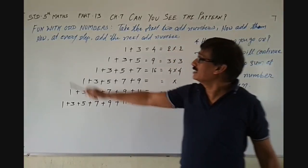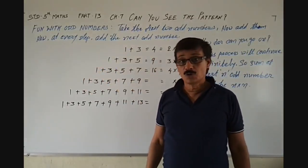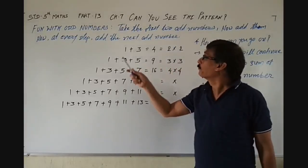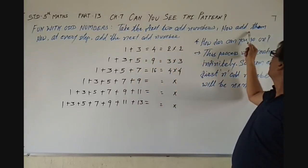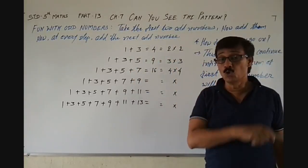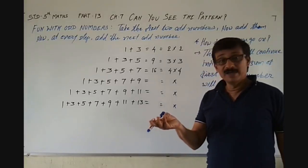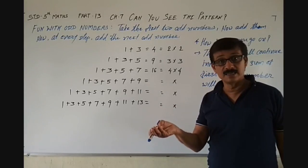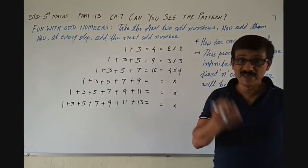Now, in this part, this is a pattern with odd numbers. You know what odd numbers are. Take the first 2 odd numbers and add them. 1 is an odd number, the next odd number is 3, the next odd number is 5. That you know very well.